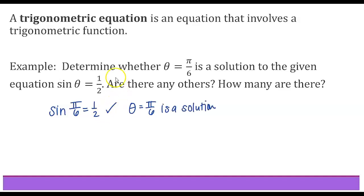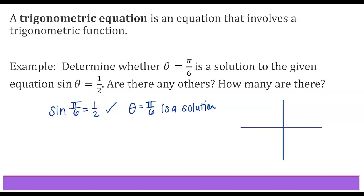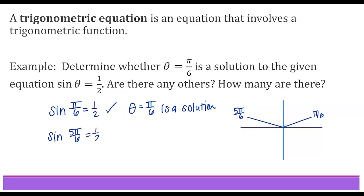The second question is: are there any other solutions? This answer of pi over 6 was the angle from quadrant 1 that solved this trigonometric equation, but there's at least one other angle on 0 to 2 pi that will make sine equal 1 half. One angle is in quadrant 1 — that was pi over 6 — but the other comes from quadrant 2 where sine is also positive. So we get 5 pi over 6, the one with a reference angle of pi over 6, and sine of 5 pi over 6 equals 1 half. So 5 pi over 6 is also a solution.